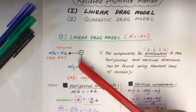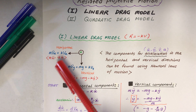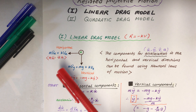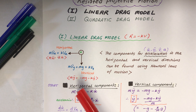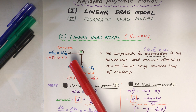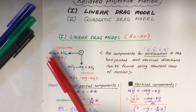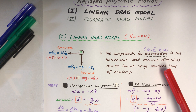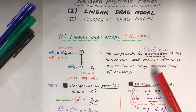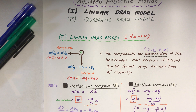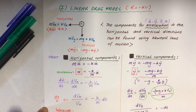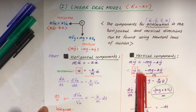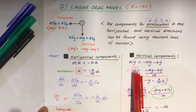This is the vertical component and that's the horizontal one. I'll put it in different ways of writing — they're all the same anyway. So get used to: x double-dot means v-dot-x, and x-dot is vx, which is just horizontal velocity, and x double-dot is horizontal acceleration. Components for acceleration in the horizontal and vertical directions can be found using Newton's laws of motion. Always start with acceleration — whether it's horizontal or vertical, start with x double-dot, y double-dot, or v-dot-x, v-dot-y.